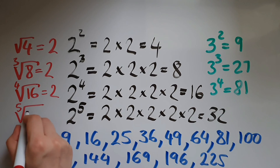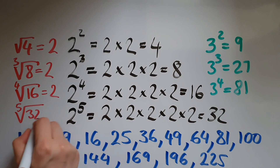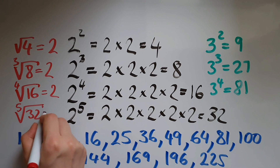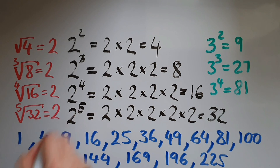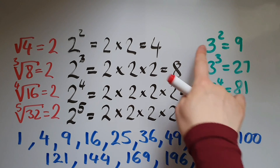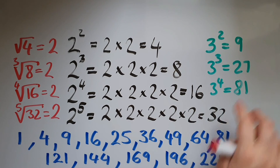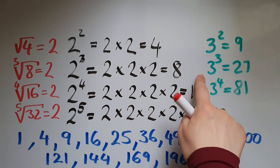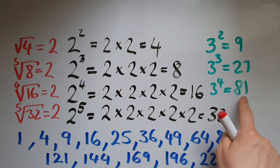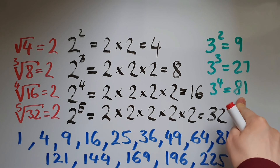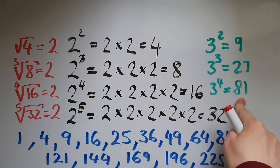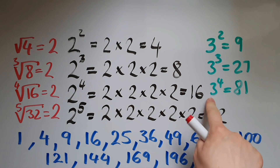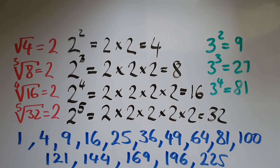The square root of 9 is 3. The cube root of 27 is 3. The fourth root of 81 is 3.